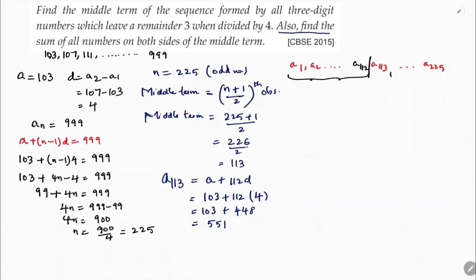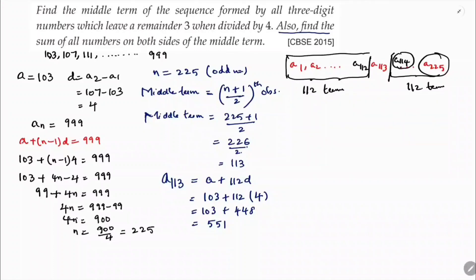After the middle term, the first term is a₁₁₄ and the last term is a₂₂₅, giving 112 terms on the right side as well. First, I'll find S₁₁₂ for the left side.